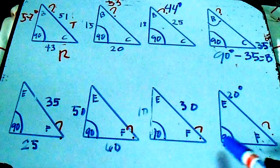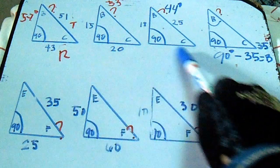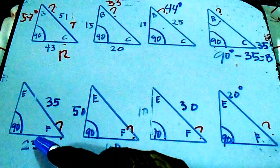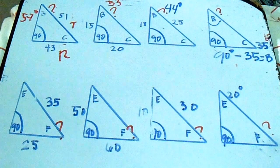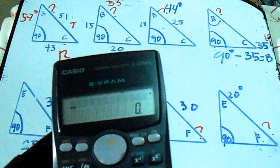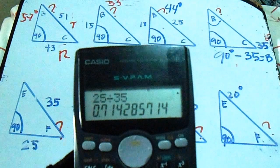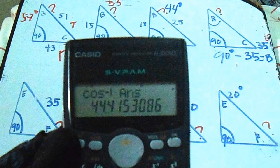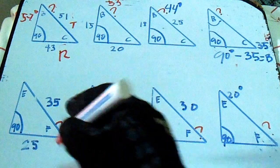Next, our question mark is letter F. It uses the same procedure as the top triangle. For example, given set = 25 and run = 35, divide run 25 by travel 35, press equals, then shift and cosine. The degrees for letter F is 44 degrees.